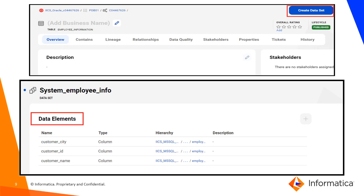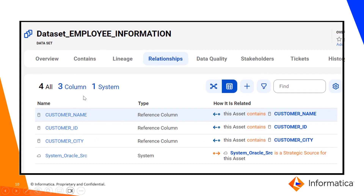Next, we create the dataset for the respective tables and mapping tasks. Navigate to the tables and mapping tasks and click Create Dataset. While creating the dataset, the user can select the list of data elements or columns to be included, and must also select the correct system for the dataset. Follow the same steps to create a dataset for the mapping task as well as the SQL Server table. From the dataset relationship tab, you can see the data elements associated with the dataset and the system to which it has been assigned. After creating datasets for the Oracle table, the mapping task, and the target SQL Server table, we move on to assign relationships between the datasets.